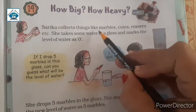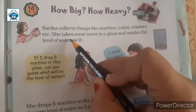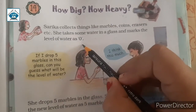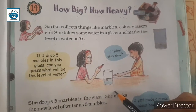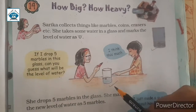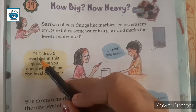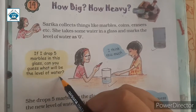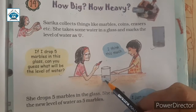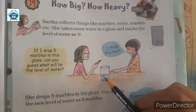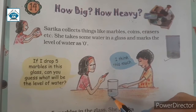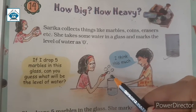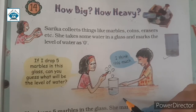Sarika collects things like marbles, coins, erasers, etc. She takes some water in a glass and marks the level of water as zero. She says that if I drop 5 marbles in this glass, can you guess what will be the level of water? This is the level of water marked as zero. Now she is saying she will put 5 marbles in. So what will be the volume of this glass?